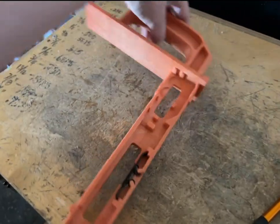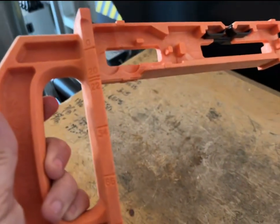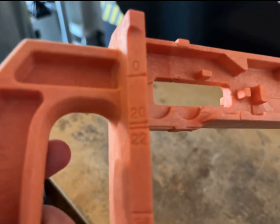This is the Blum Metabox accessory jig. It is a nice tool to have around.